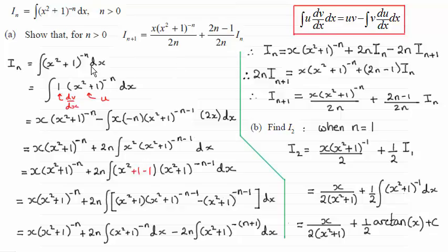Now, you can check through my working here to where I got the answer, and then in part b we had to find I₂, and you can see that I've got the answer here. I'll run through the method though, just in case there were any problems.